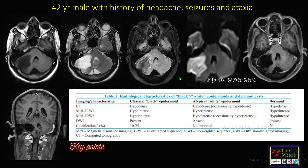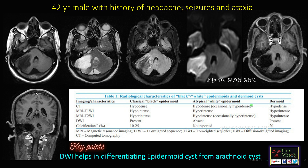Restricted diffusion on DWI is seen in epidermoid cyst and is mostly not seen in arachnoid cyst. This is also a case of classical black epidermoid because it is showing restricted diffusion on DWI, whereas a typical white epidermoid will not show restricted diffusion. Pause the slide and see the three differences between classical black epidermoid, atypical white epidermoid, and dermoid cyst. DWI helps in differentiating epidermoid cyst from arachnoid cyst.